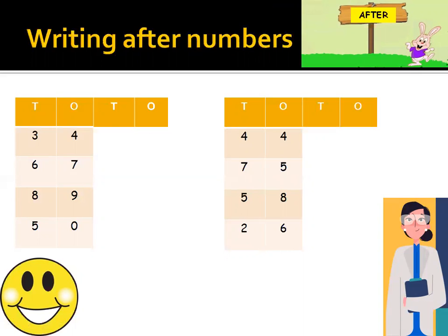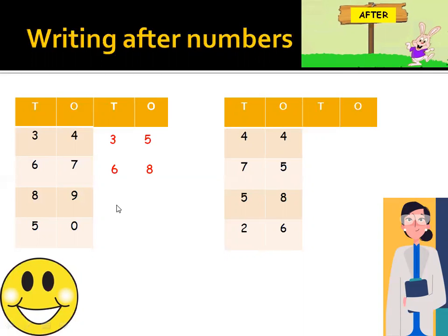First example is 34. After 34, which number comes? Yes, it's 35. Next is 67. After 67, which number comes? It's 68. Next example is 89. After 89, here comes 90. Next is 50. After 50, here comes 51.